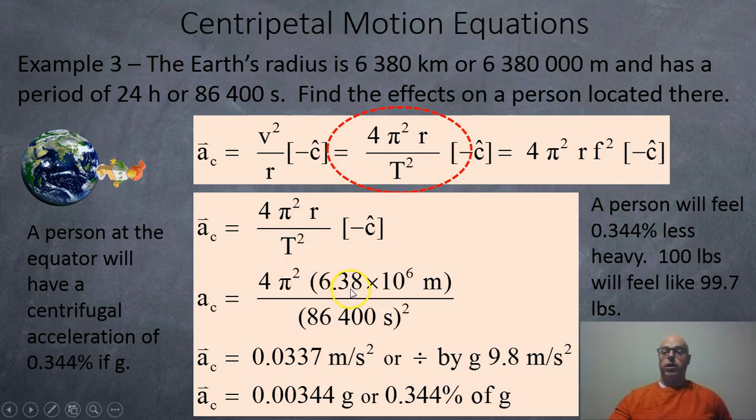So we have 4π² times the radius of the earth, 6.38 times 10 to the 6 meters, divided by 86,400 seconds squared. And we're going to get an acceleration of 0.0337 meters per second squared. So because the person is standing on the edge, they're going to feel like a motion outwards, a centrifugal acceleration, I guess you could say, of this value here. If you divide by 9.8, you get 0.00344 Gs. So that means the person is feeling a change in their apparent weight of 0.344%. So they're actually going to weigh a little bit less than normal, or at least they'll feel that way. So a person will feel 0.344% less heavy. So a 100 pound person will actually now feel like they only weigh 99.7 pounds.